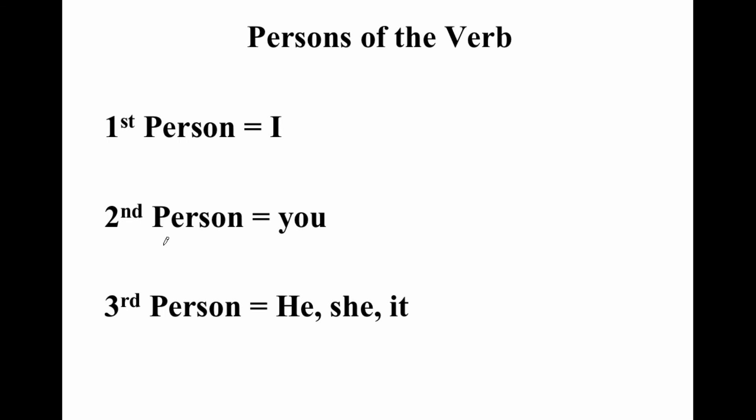So again: first person I, second person you, third person he, she, or it. From now on in class, if I say 'second person of the verb,' you know I'm talking about the tū form.